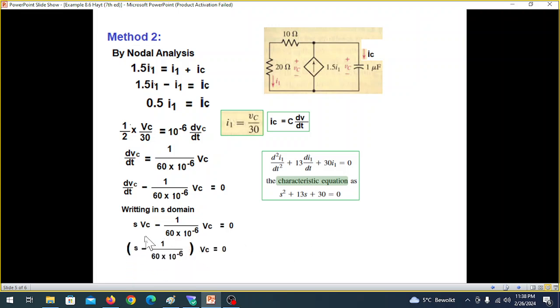then whatever is in the bracket is the characteristics equation. So the characteristics equation will be as shown here. And that means S is 1 over 60 into 10 to the power of minus 6.